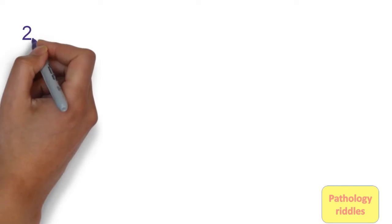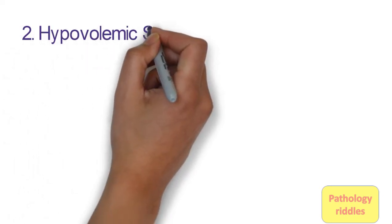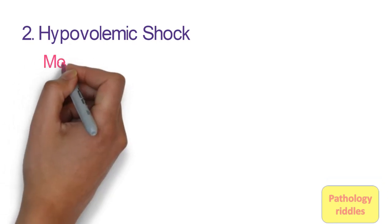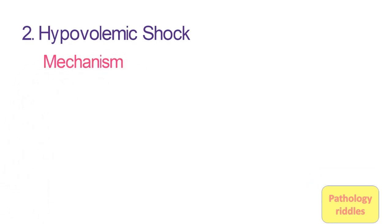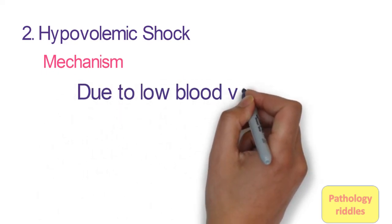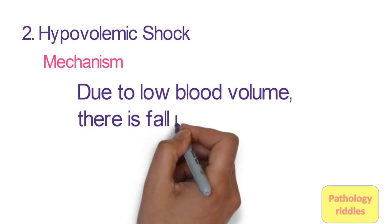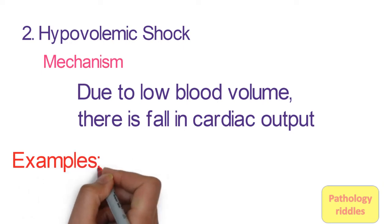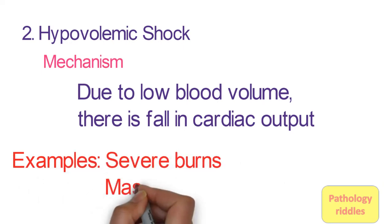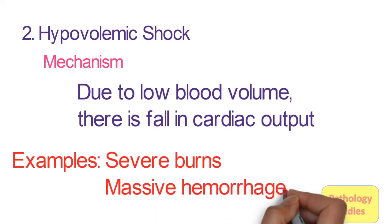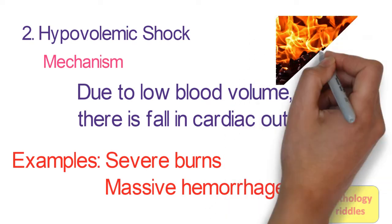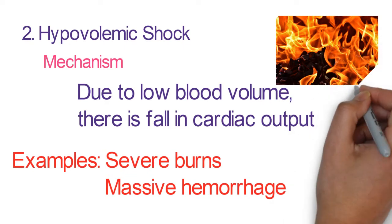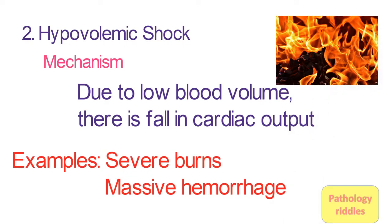Next we come to the second cause of shock, that is hypovolemic shock. The word itself tells you that there is less volume. The mechanism is that there is low blood volume and hence there is decreased cardiac output. The conditions that cause low blood volume are severe burns — in severe burns the fluid is lost, so the blood volume is less. Even in road traffic accidents when there is massive hemorrhage there is a lot of blood loss, so there is decreased effective circulating blood volume, decreased cardiac output, and hence the patient is in shock.